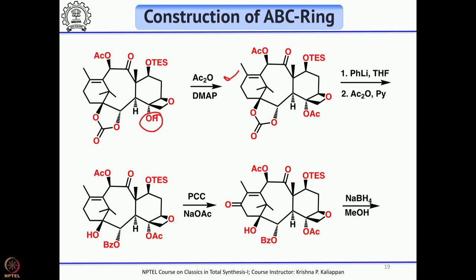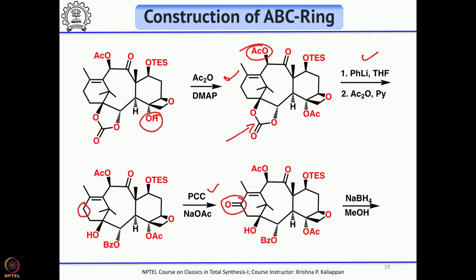The cyclic carbonate was opened with phenyllithium to selectively give the benzoate. The CH₂ needed to be converted to CHOH, so PCC with sodium acetate carried out allylic oxidation to give an alpha,beta-unsaturated ketone. Reduction with sodium borohydride in methanol gave the corresponding alcohol.